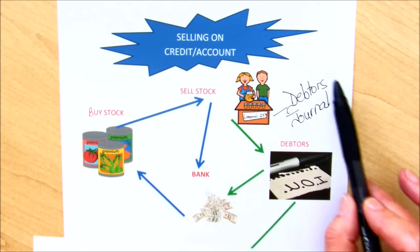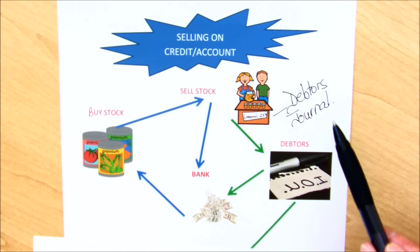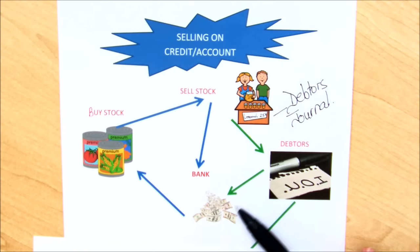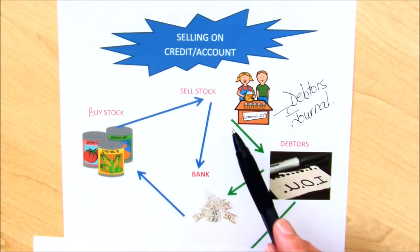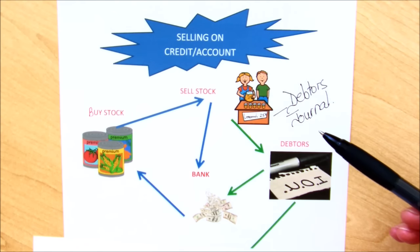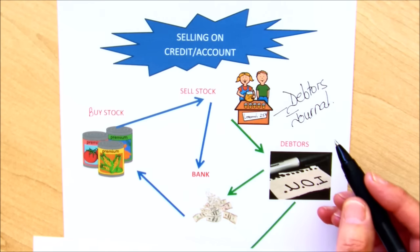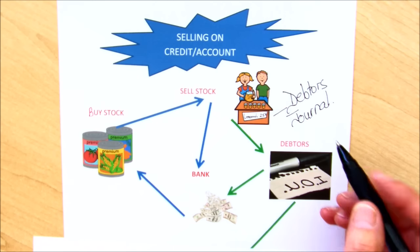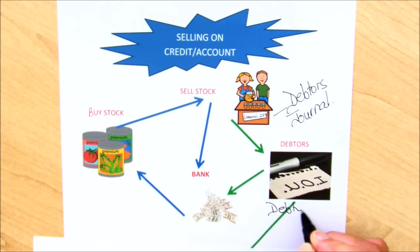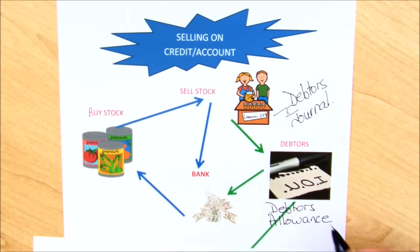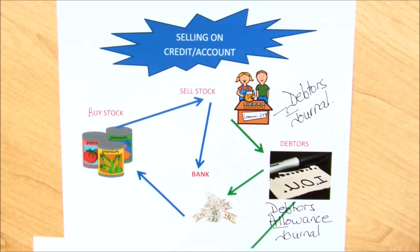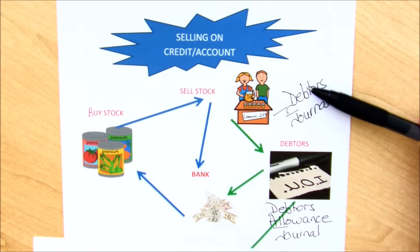So we have a debtors journal. We will then receive the cash, and that will go back into our cash receipts journal, and we will then be able to buy our stock. At times, the debtors will return goods to us, so we're going to have to bring in another thing called debtors' allowances. The word allowance means you're giving somebody a reduction. If somebody returns the goods to the shop, we're not going to refund their money because they never paid us. So we will bring in these two extra journals.